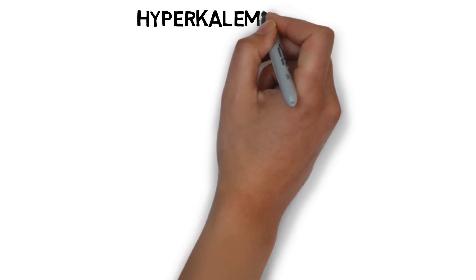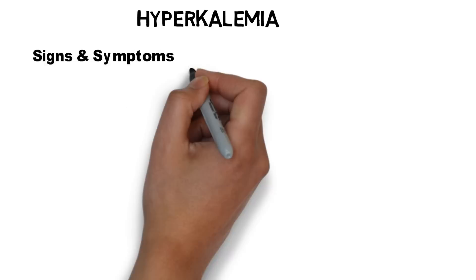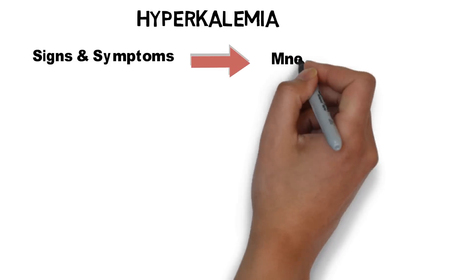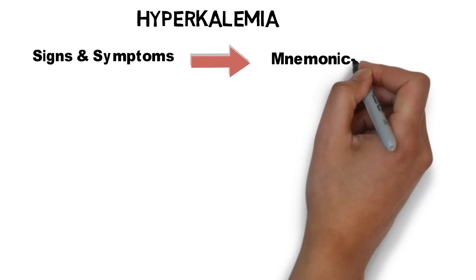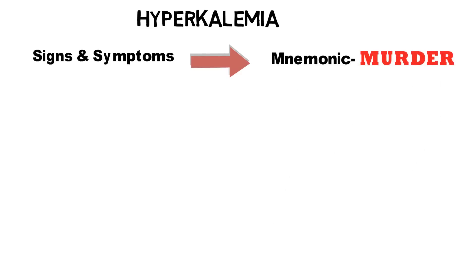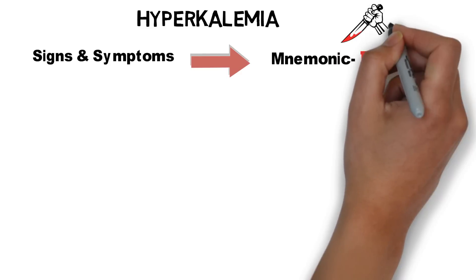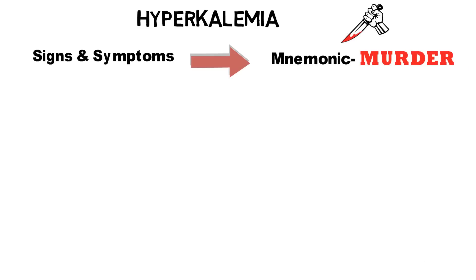Now discussing hyperkalemia — when potassium is more than 5.5 mEq per litre. The signs and symptoms of hyperkalemia can be remembered by the mnemonic MURDER. Remember this as: if you can't see the signs and symptoms of hyperkalemia, that is like a murder.